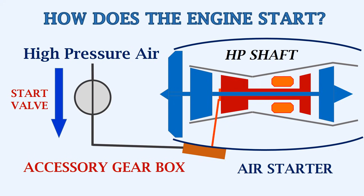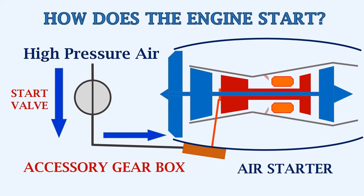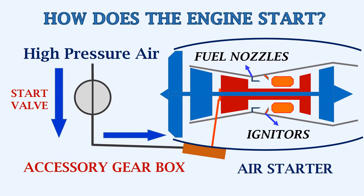When the high pressure air starts flowing through the ducts to the accessory gearbox, the turbine in the air starter unit starts to rotate. This causes the air starter unit's shaft to rotate. Since it is connected to the N2 shaft, the N2 shaft also begins to rotate. As the N2 shaft rotates, the igniters come on inside the combustor. The fuel is then introduced through the fuel nozzles to create a fuel-air mixture.